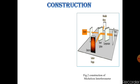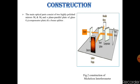Construction: The main optical parts consist of two highly polished mirrors M1 and M2, and a plain parallel plate of glass G1 and a beam splitter.